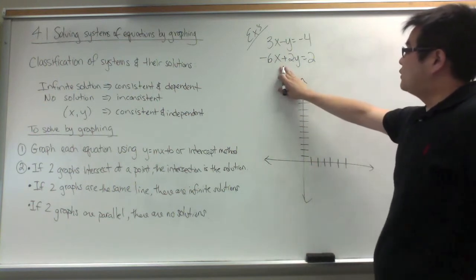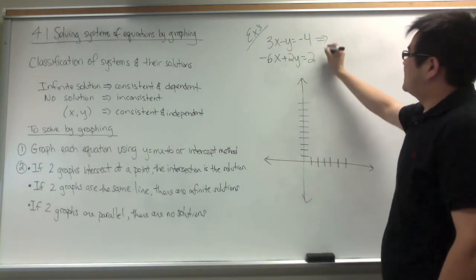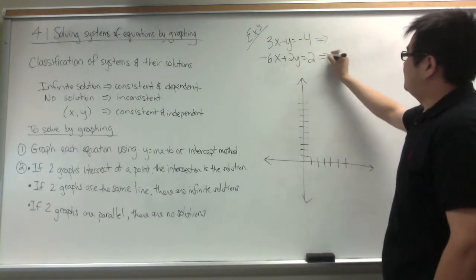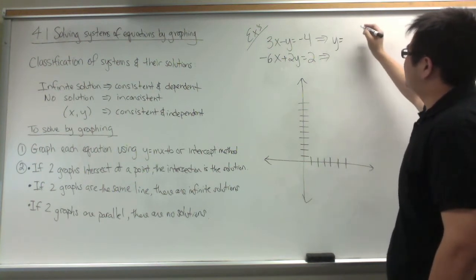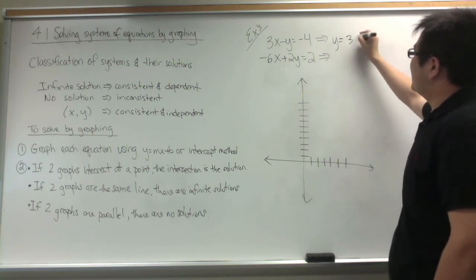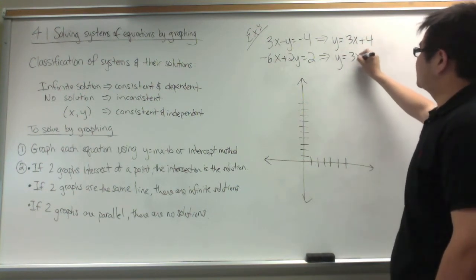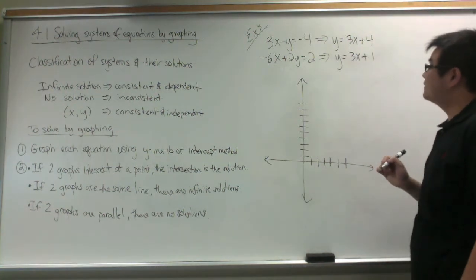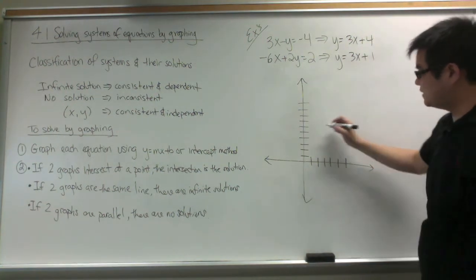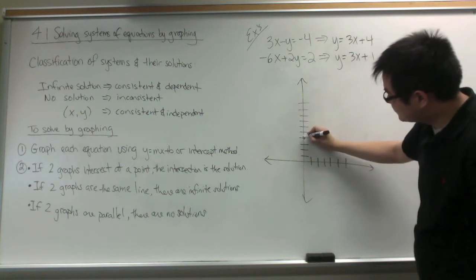In our next system of equations, what we are going to do is solve for y so we can graph it in y equals mx plus b form. The first one will become y equals 3x plus 4. The second one gives y equals 3x plus 1. We are going to graph both of them. The first one has a y-intercept of 4.